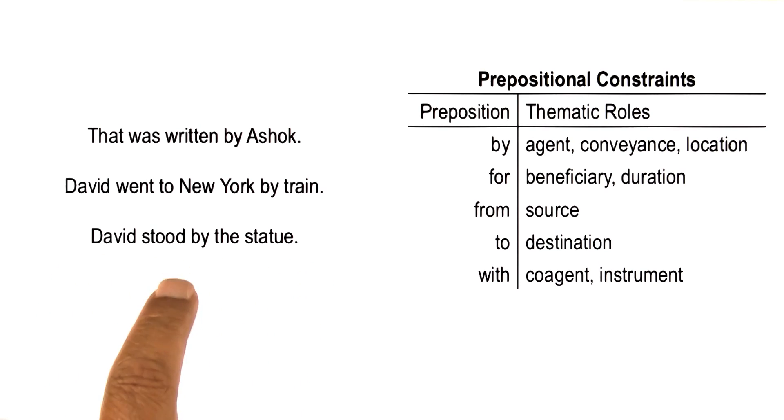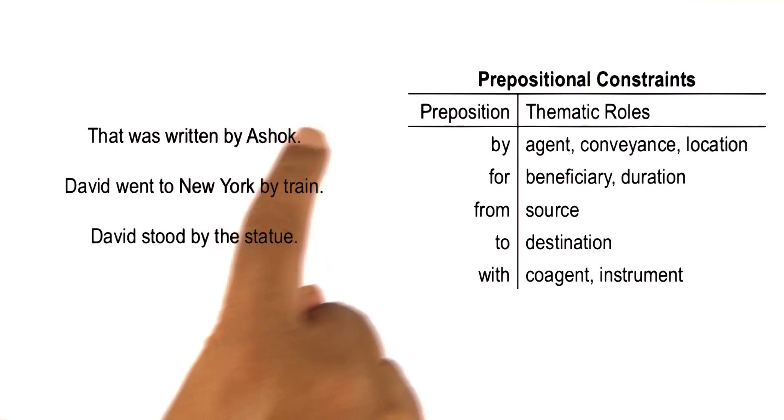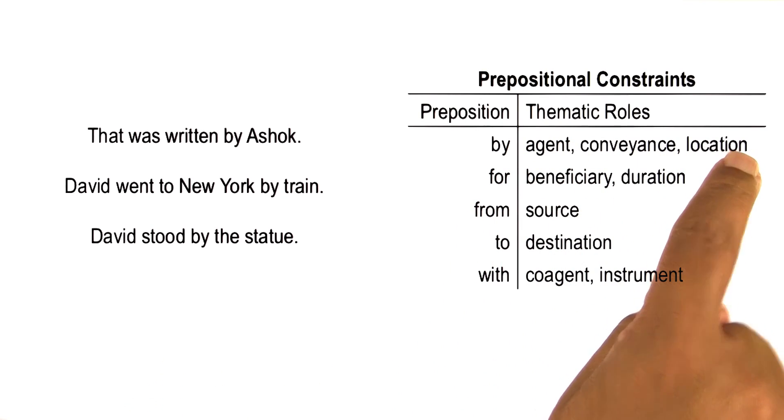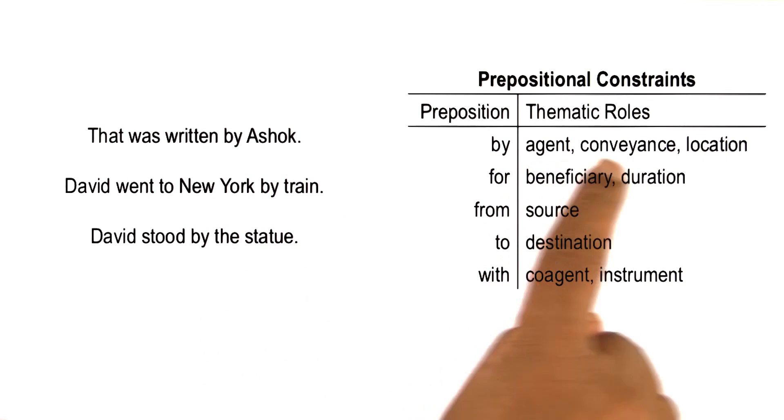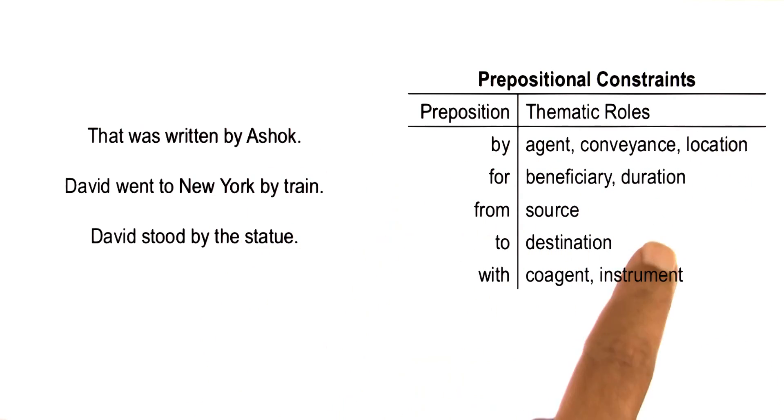David stood by the statue. Here, by is pointing to a location, by the statue. So while use of the word by helped us in that it constrained the interpretation of Ashok to either an agent, conveyance, or location, it by itself doesn't tell us whether Ashok is an agent or a conveyance or location. We need some additional knowledge.